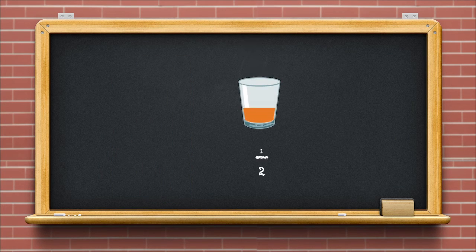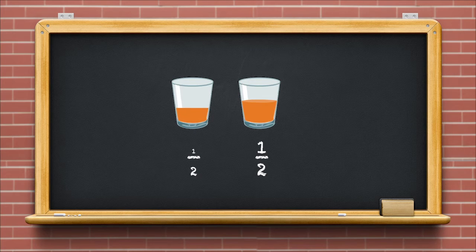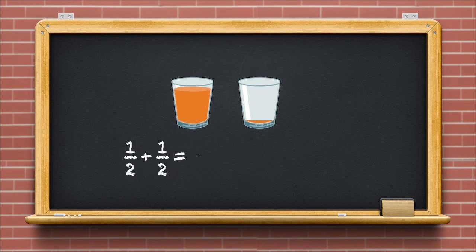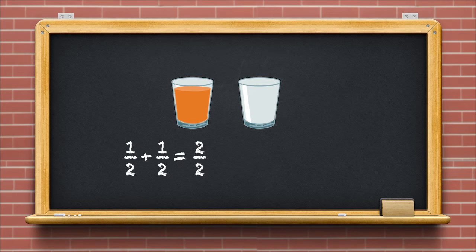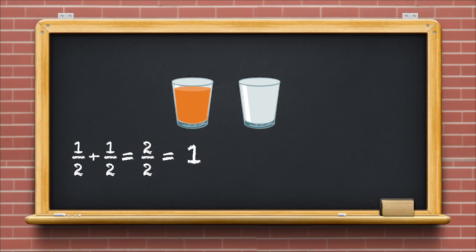Let us take two half-filled glasses of juice. If we pour the juice from one glass into the other, we are adding half and half, and we get 1 whole glass of juice.